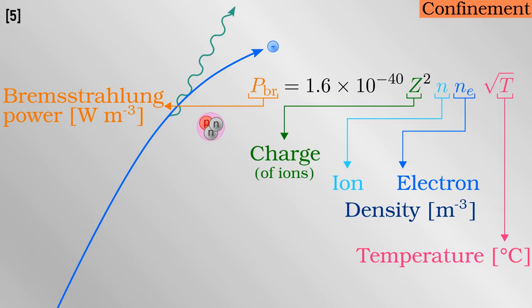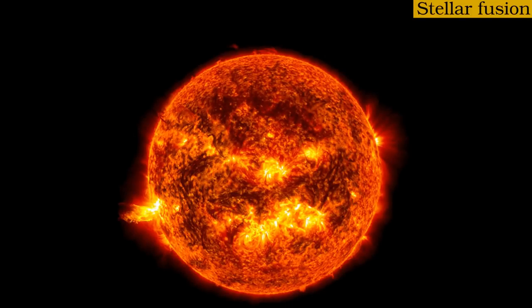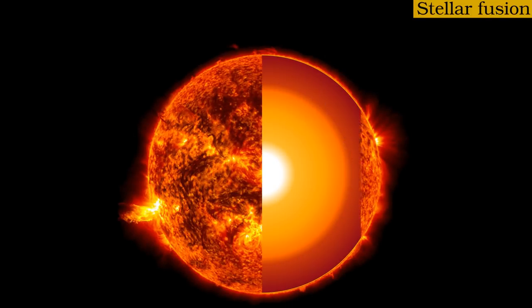Any good design for a fusion power plant seeks to mitigate bremsstrahlung losses by limiting the operational temperature. The power loss is also proportional to the square of the charge of the constituent ions, which is very significant. For example, the boron ions with a charge of plus 5 in the aneutronic proton boron reaction would lead to 25 times higher losses than, say, a deuterium plasma where the ions have a charge of plus 1. With all that in mind, let's look at confinement techniques.